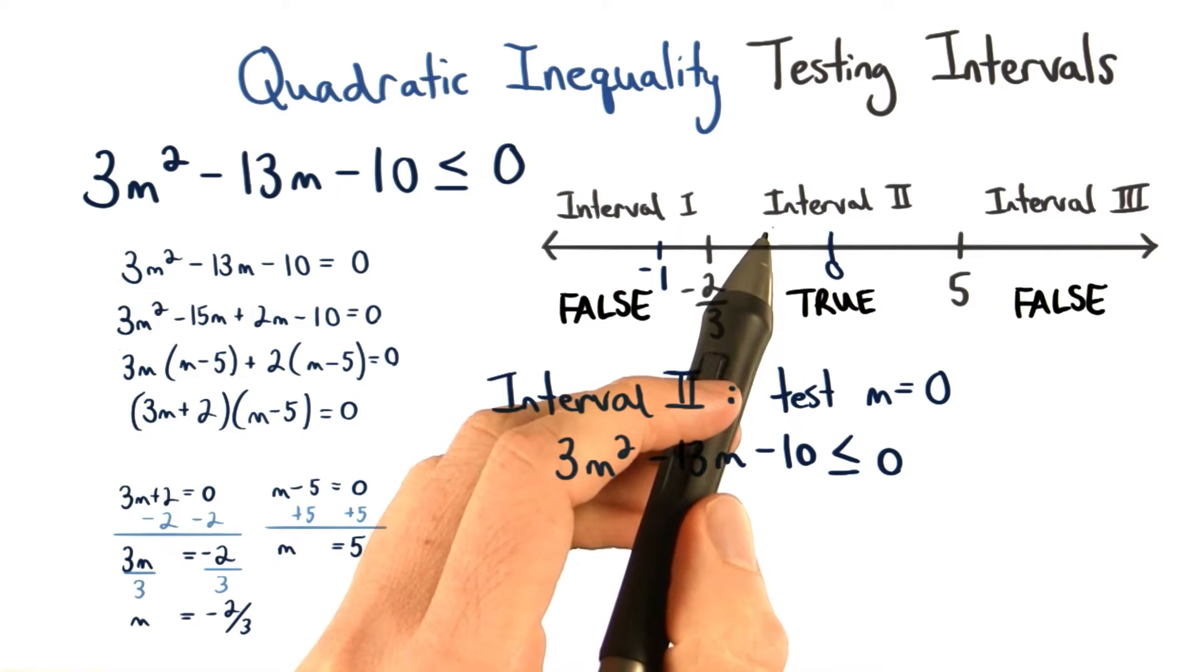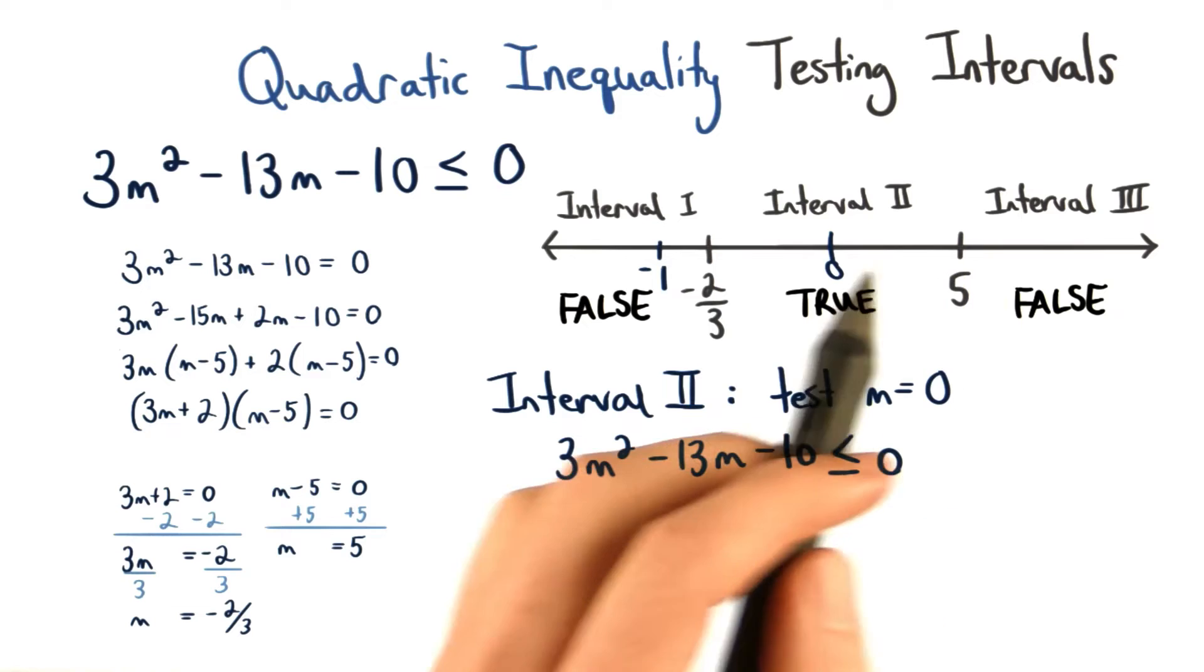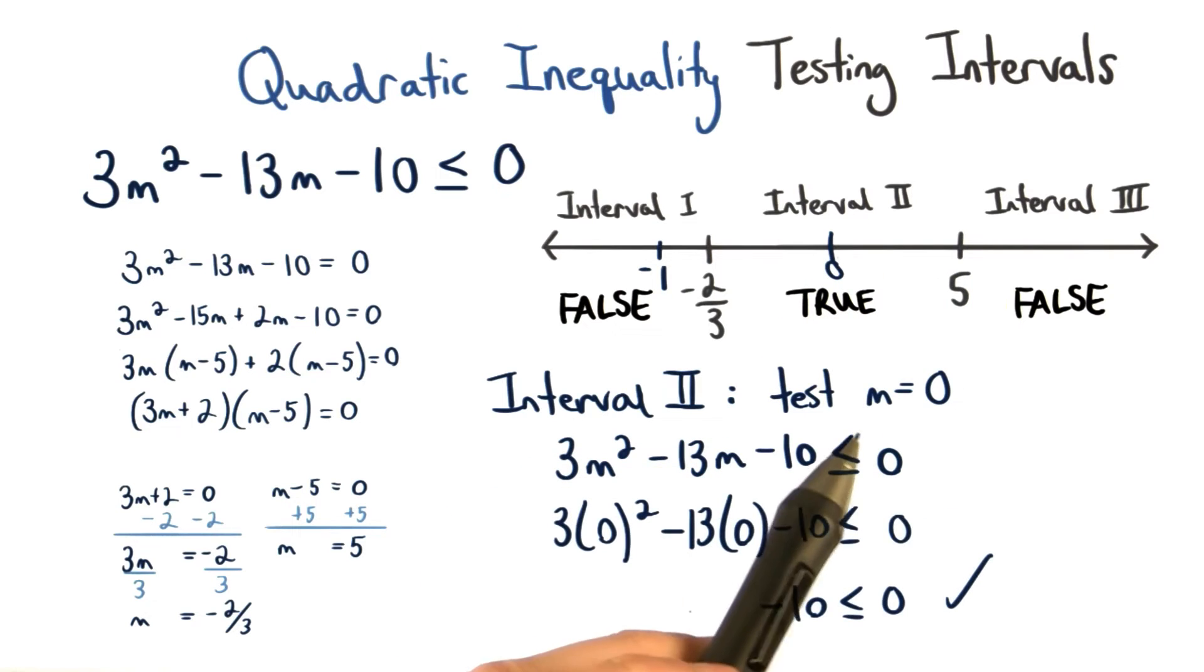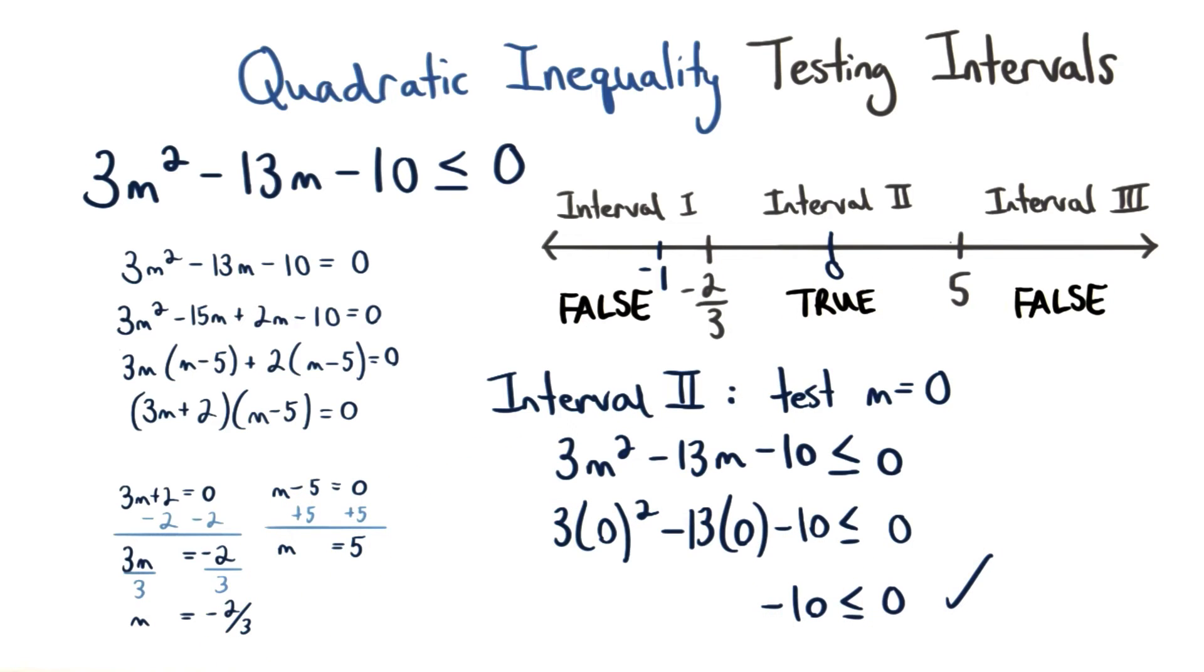Next, we want to test the value in interval 2. I think the easiest value to test in this region would be 0. When we plug in 0 for m, we lose these two terms to get negative 10 is less than or equal to 0, which we know is true. So these values can be included in our solution set.